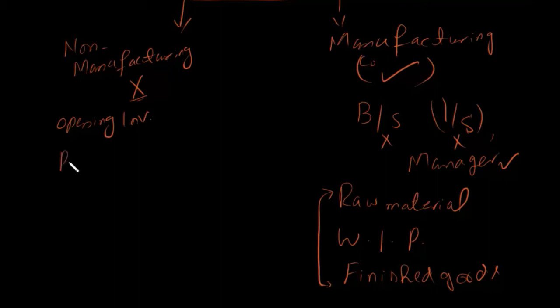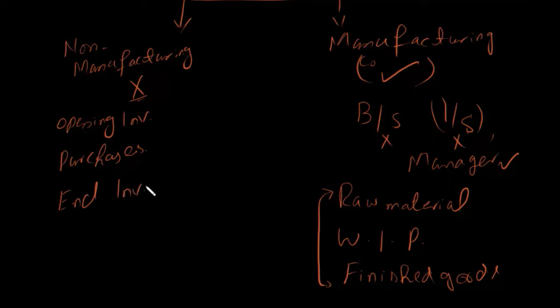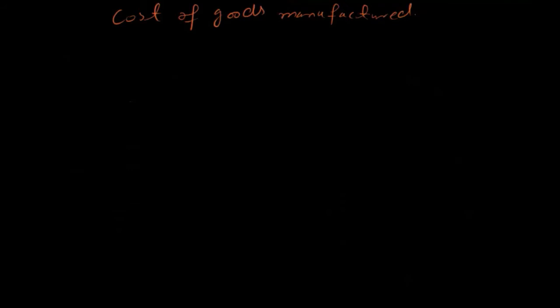Non-manufacturing companies have Purchases and Ending Inventory, and only Ending Inventory is shown on the balance sheet. Let me explain the Cost of Goods Manufactured with the help of a schedule — it is very easy to explain.